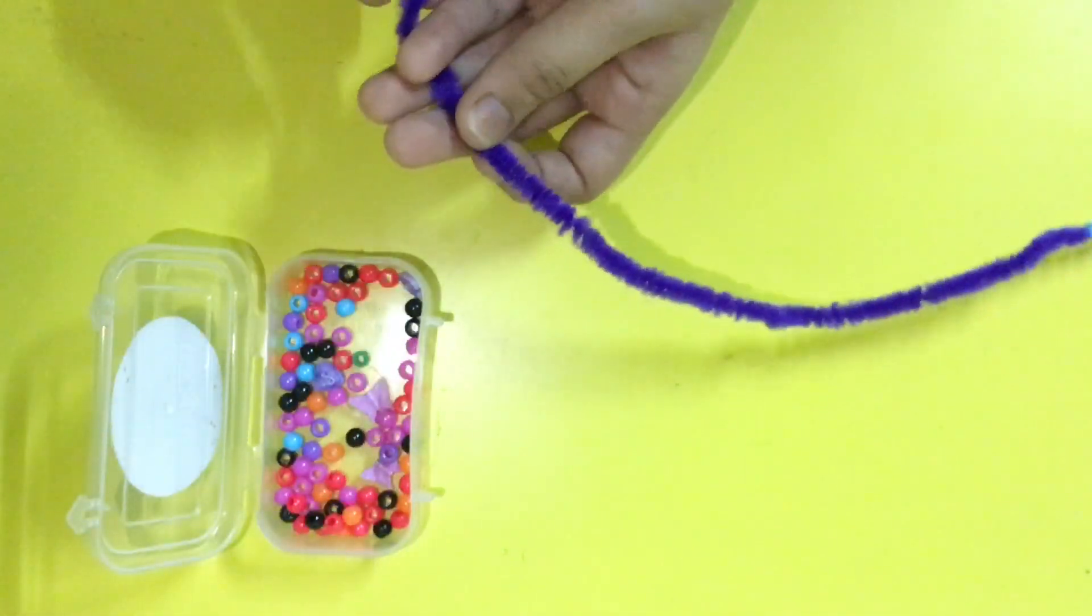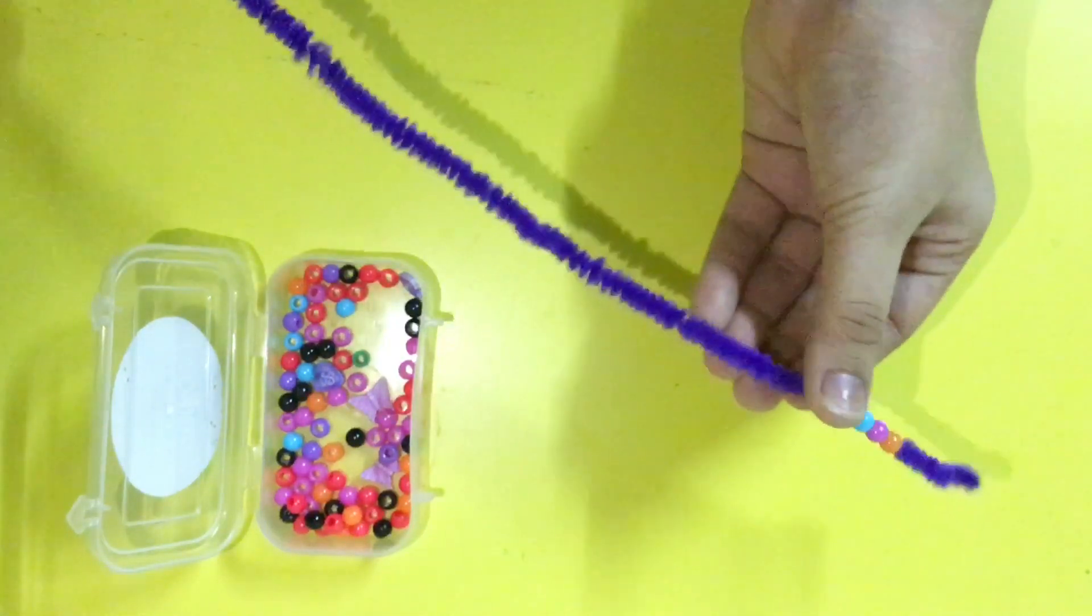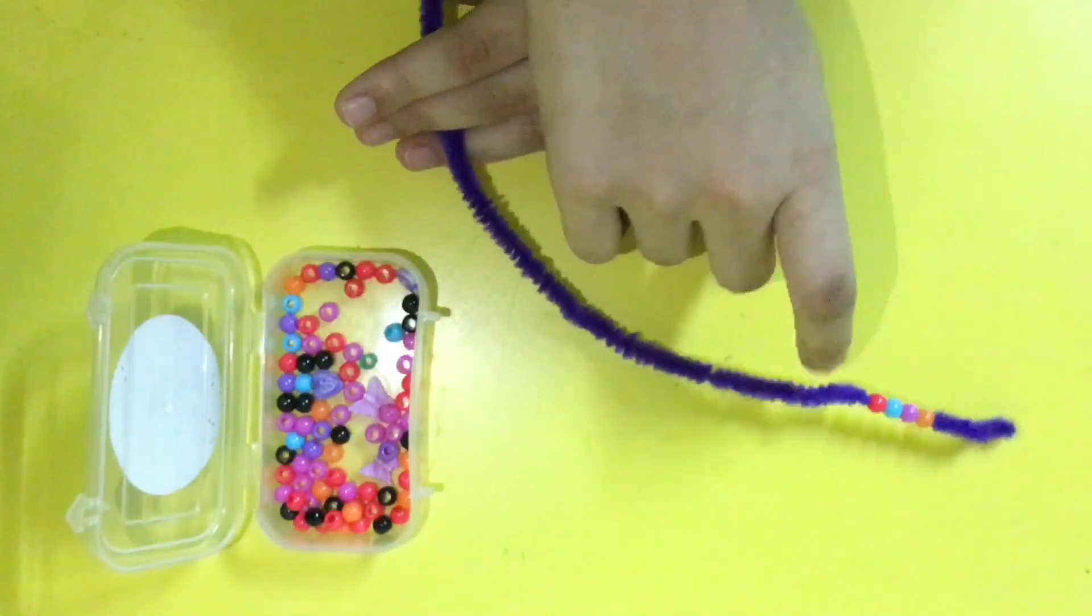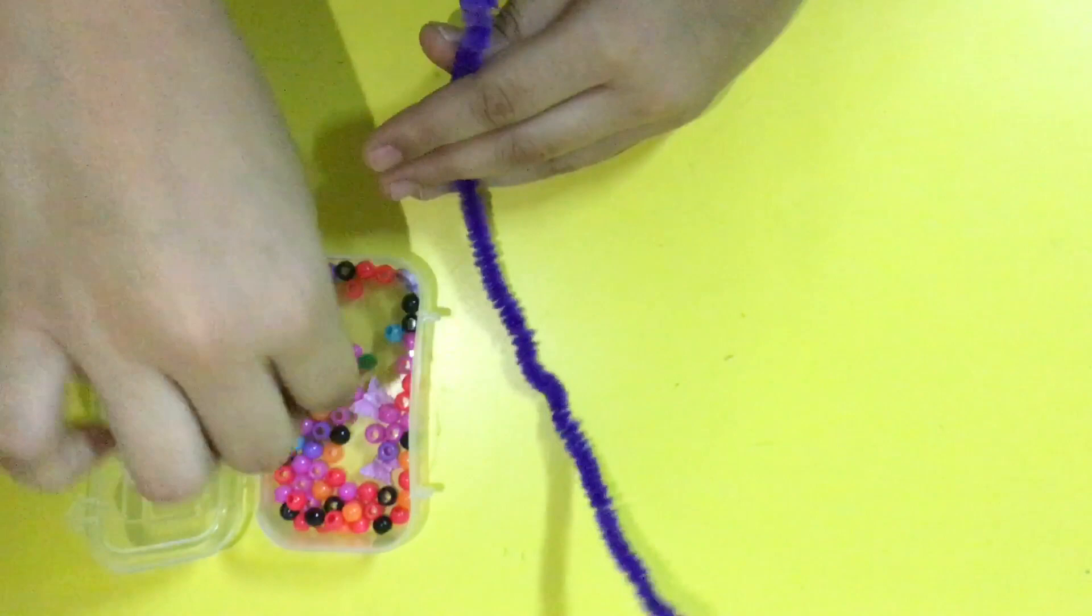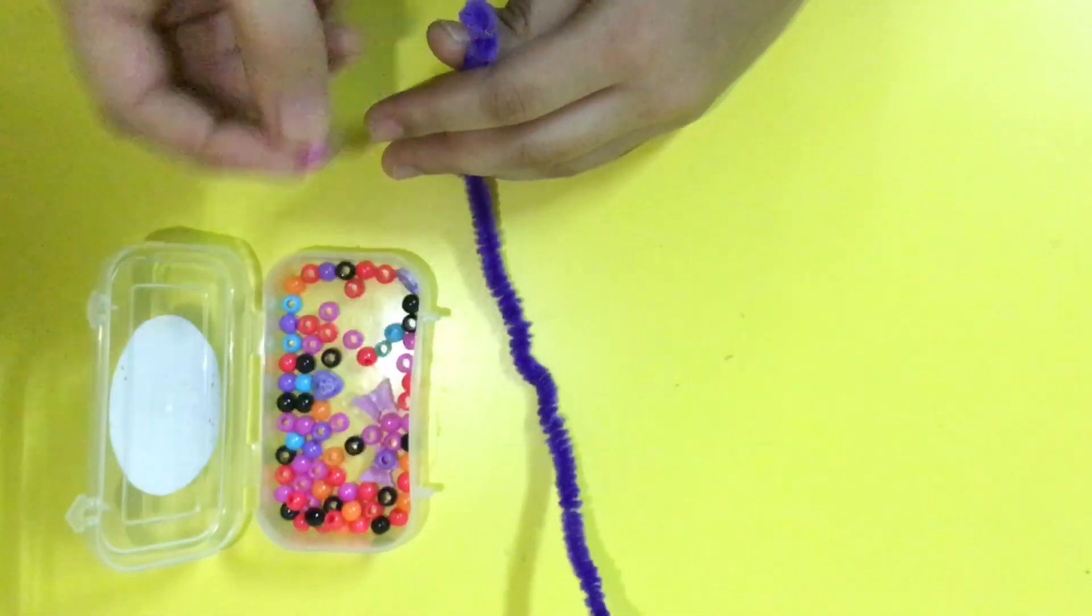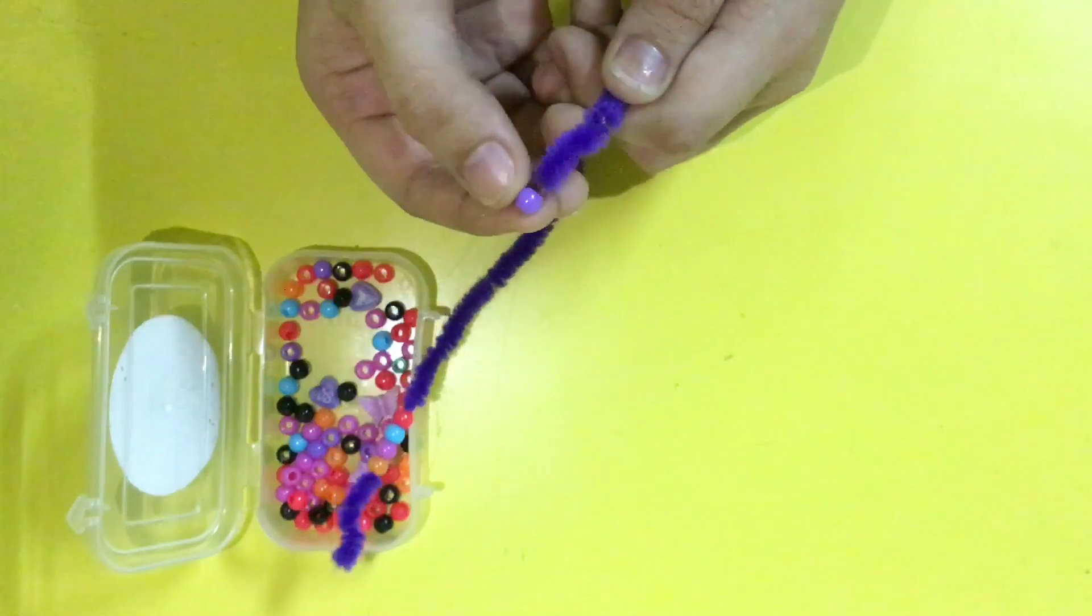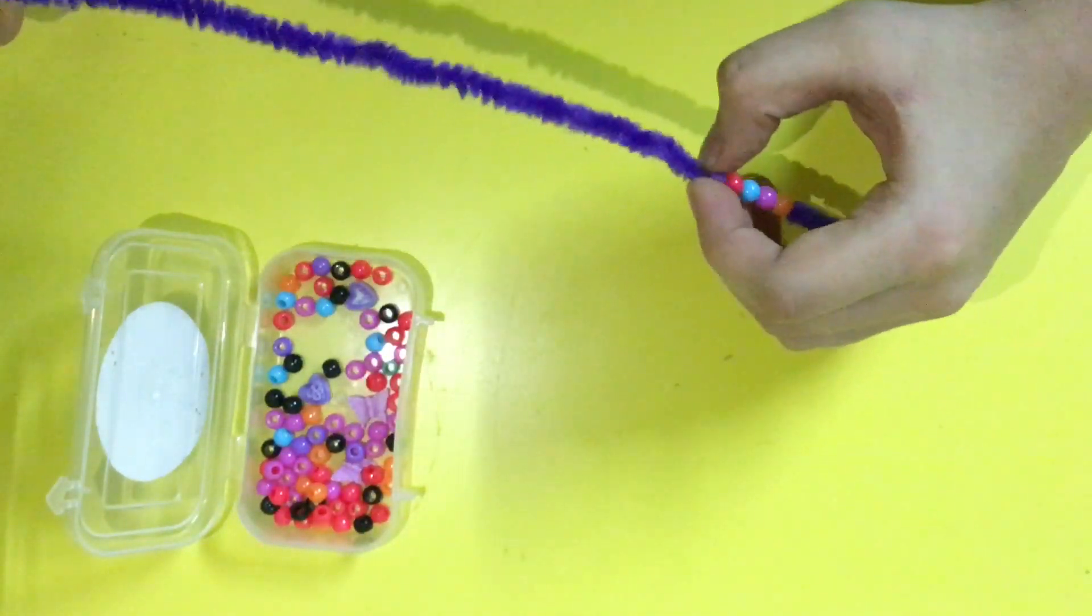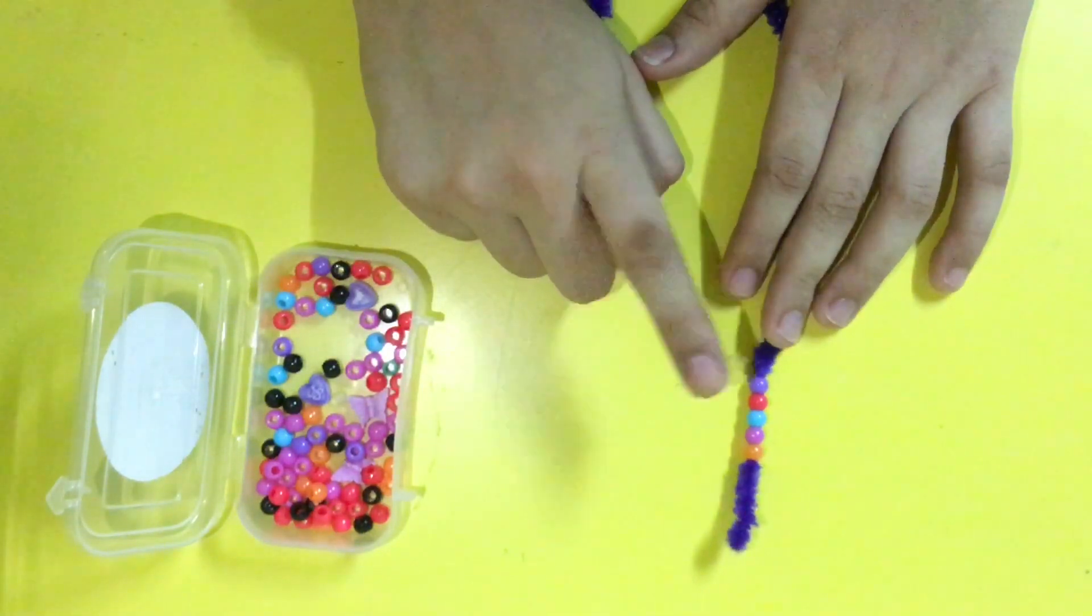We're gonna continue that. I'm going to add one more color—this purple one because it will match the pipe cleaner. And this is pretty much what we are going to do. I'm going to repeat this step again and again.